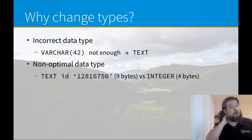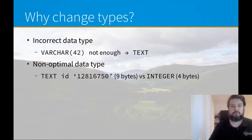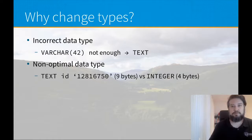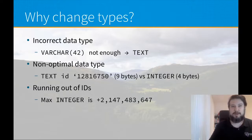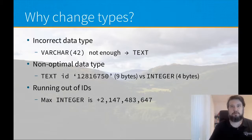Secondly, you may want to change a non-optimal data type that you entered in your table. For example, an ID column that is text and takes up 9 bytes, versus an integer column that stores this ID for only 4 bytes, which will help your table scale better. Also, you may come across the situation of running out of IDs if you have an integer ID column. The maximum limit is 2.1 billion, so you may come across the situation of ID exhaustion.